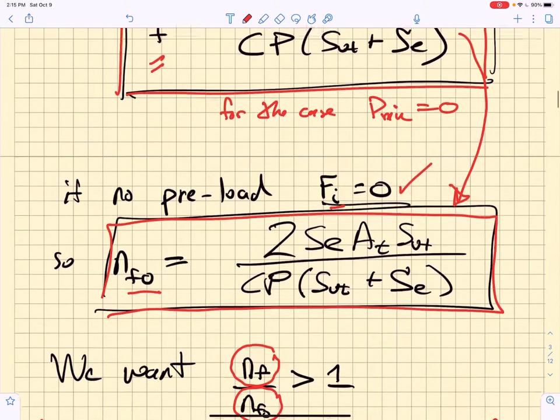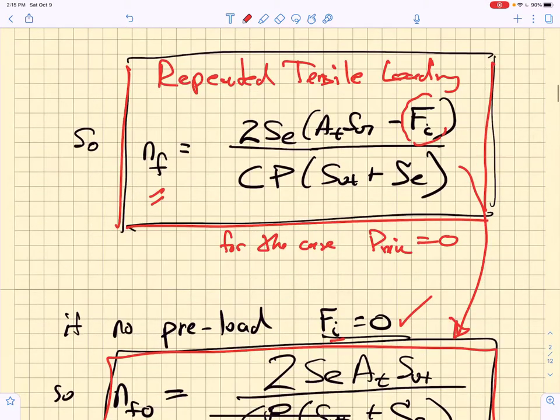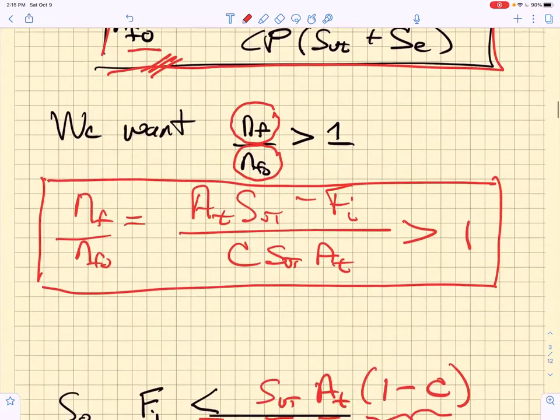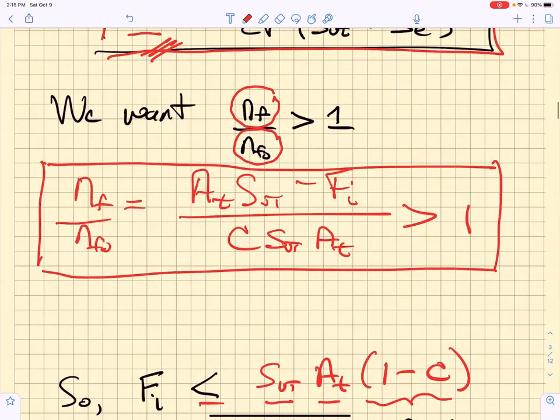If we do that, we just take the ratio of this equation up here to this equation down here. That's nf to nf0. We set that to be greater than 1, and when we do that, we get this equation right here.